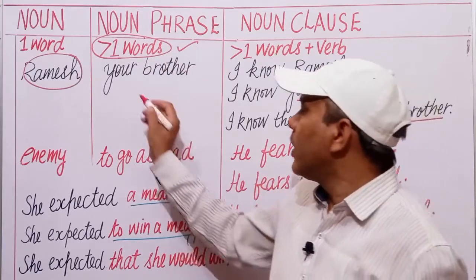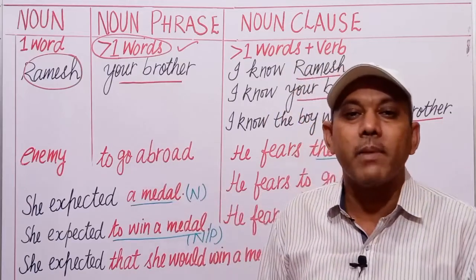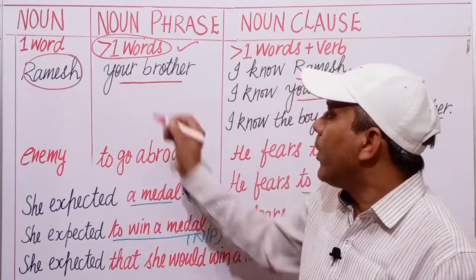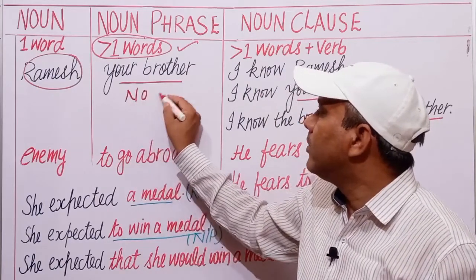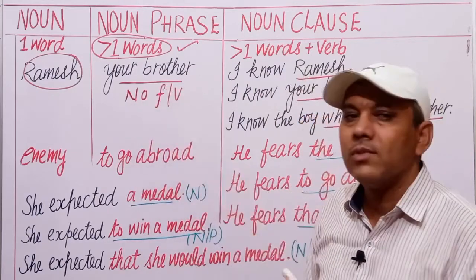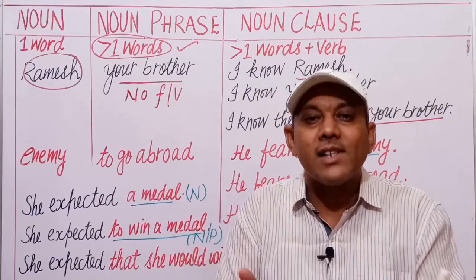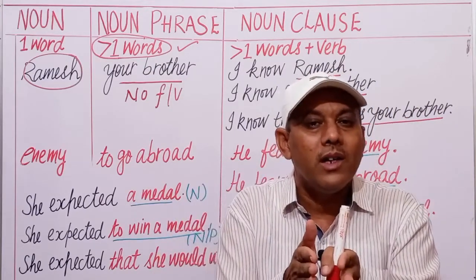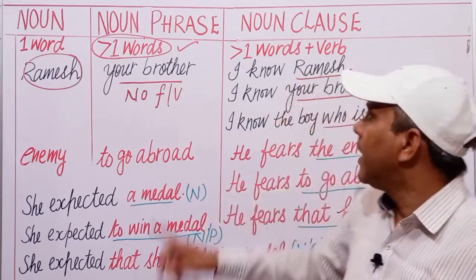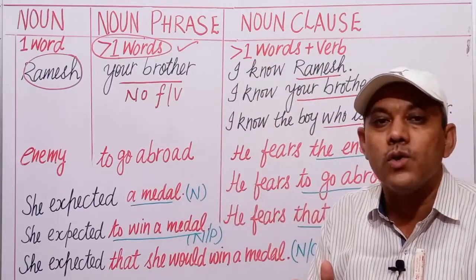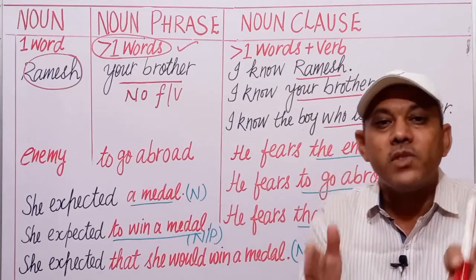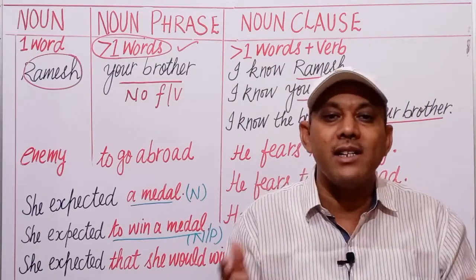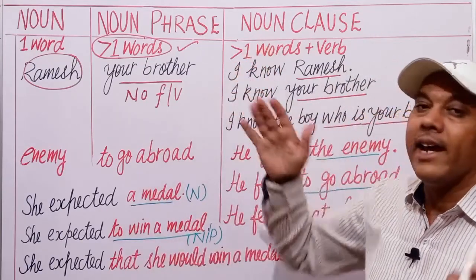For example, 'your brother' — it has no finite verb, it can't stand on its own, it has no complete meaning. But in case of a noun clause, when a subject-verb combination acts as a noun in a sentence, it is known as a noun clause.